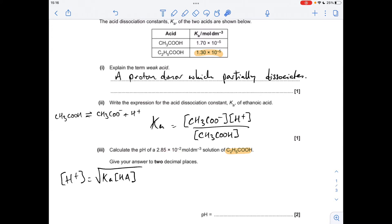Once you've got your H plus concentration, minus log that, and that gives you the pH. At two decimal places, the pH is 3.22.